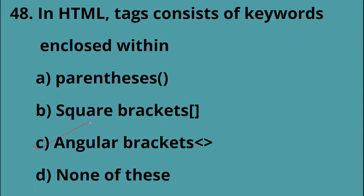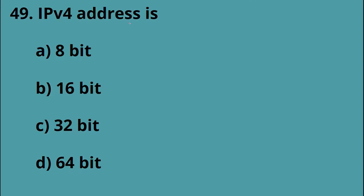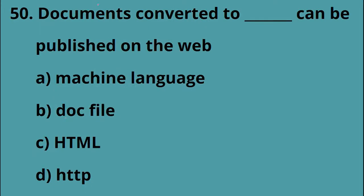IPv4 addresses — IPv4 is Internet Protocol version 4, which is 32-bit. A document converted to HTML can be published on the web. The answer is Option C, HTML.